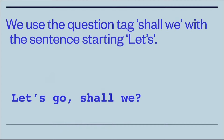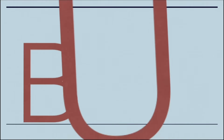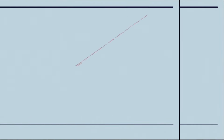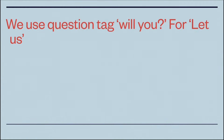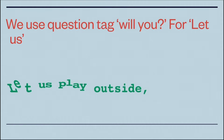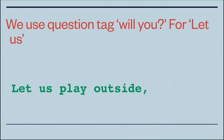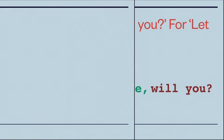We use the question tag 'shall we' with sentences starting with 'let's.' For example, 'Let's go, shall we?' — 'let's' means we do it together. But we use 'will you' for 'let us' — for example, 'Let us play outside, will you?' — here 'let us' means you are asking for permission.